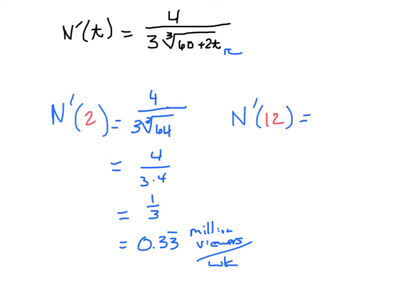If you want to look at the rate of increase at week 12, you'd plug 12 in for t, so that's going to be 4/3 times the cube root of 60 + 24, which is 84. And that, when you plug it into your calculator, works out to be about 0.3 million viewers per week.